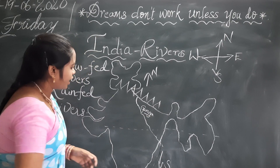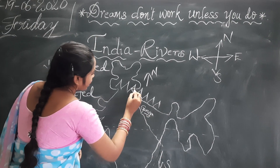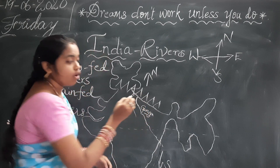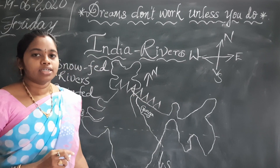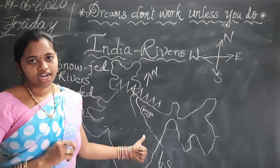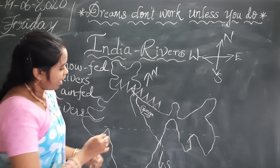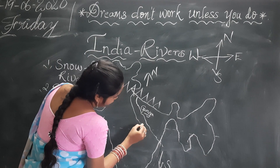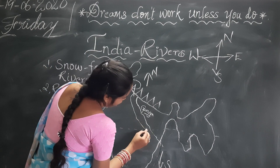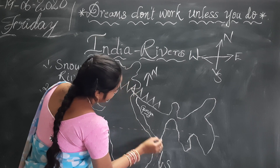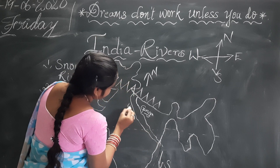The second one is Yamuna. Yamuna also originates at the Yamunotri glacier in Uttarakhand. The Yamuna is also a snowfed river.